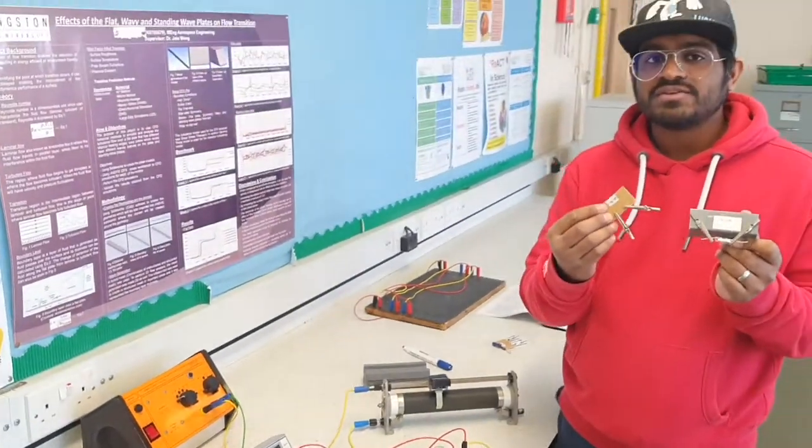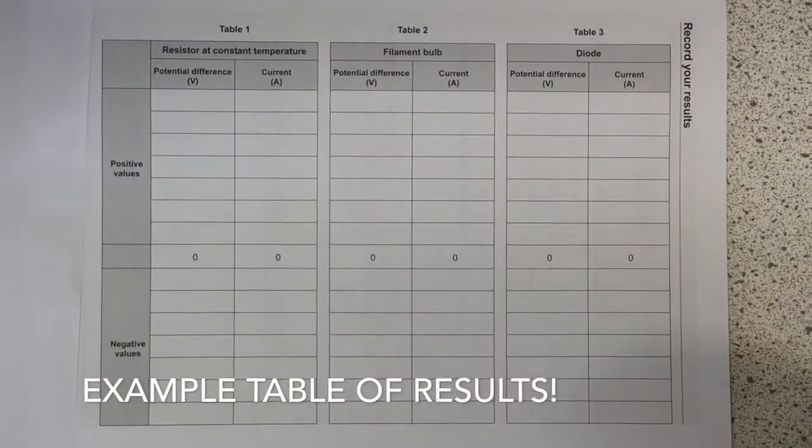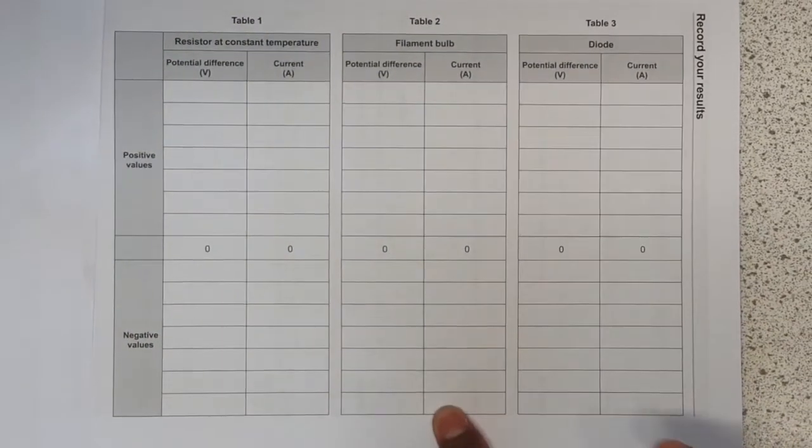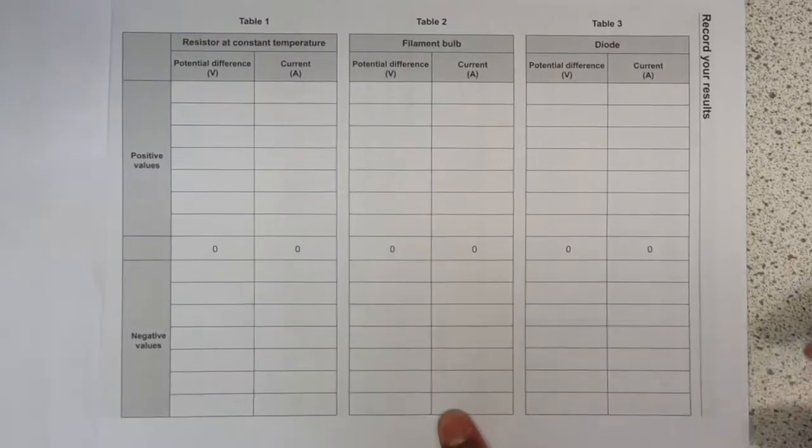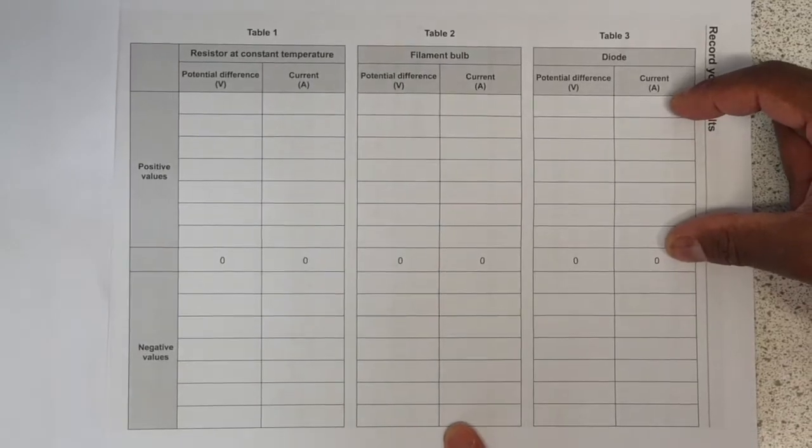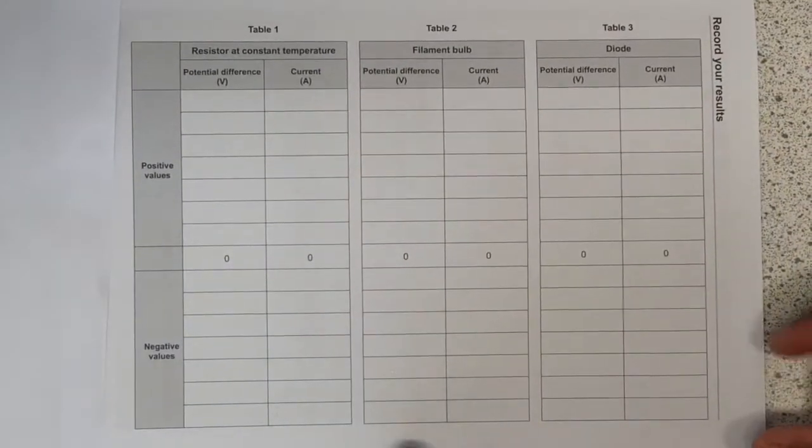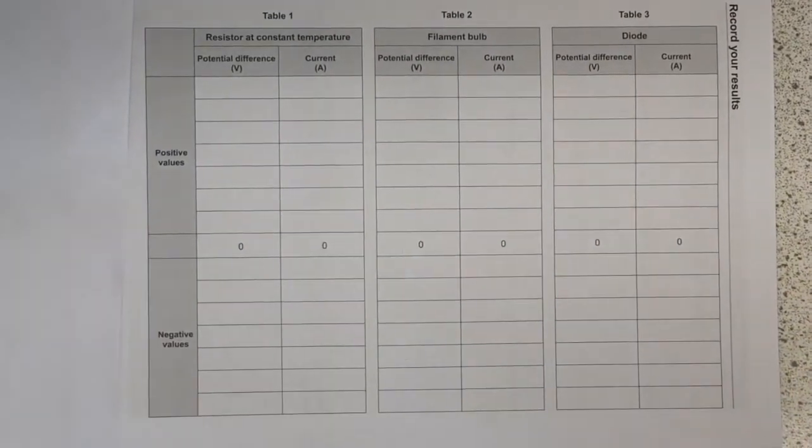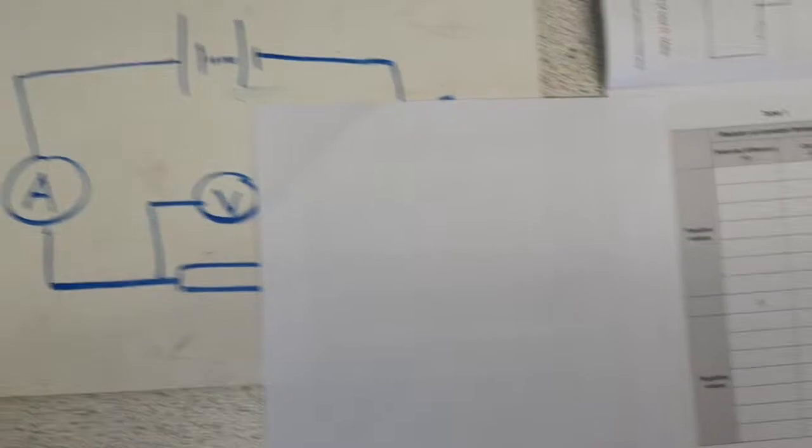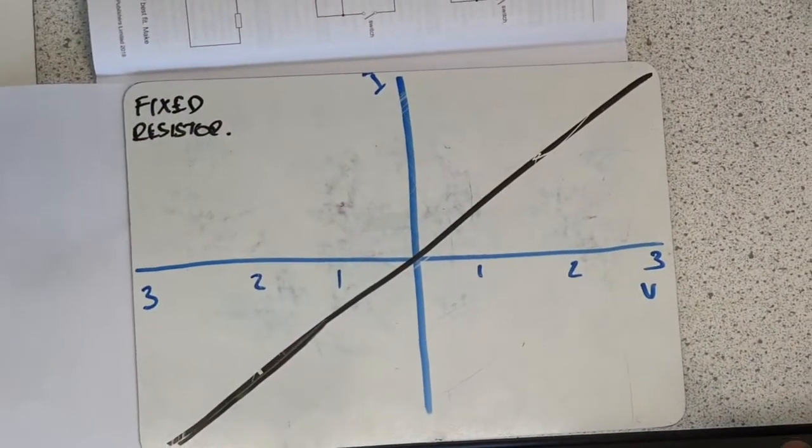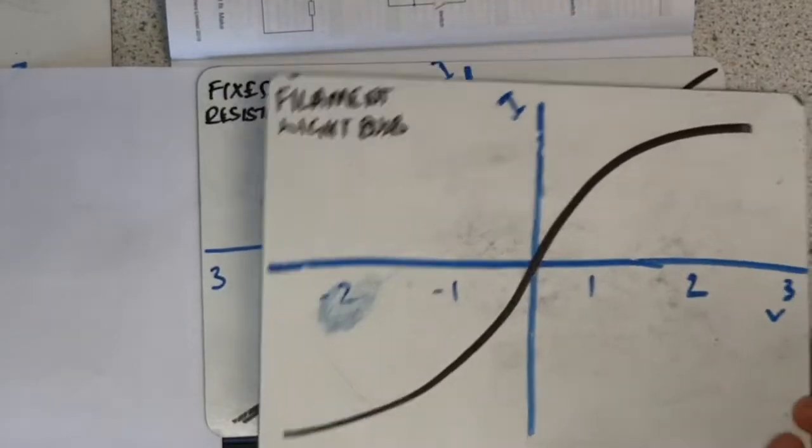Alright guys, you're going to have three tables of results. One is the fixed resistor, the other is the filament bulb, and the last one is the diode. You're going to have a positive set of values at the top and then negative values below. For example, for a fixed resistor, you're going to get a straight line, which will show you that it follows Ohm's law. But with a filament bulb, you should get an S curve.